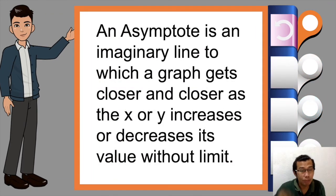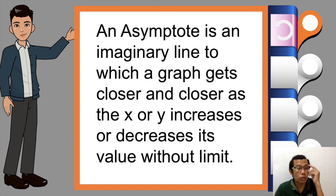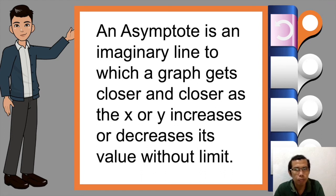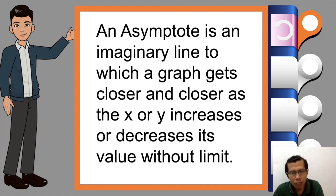Now let's define the term. An asymptote is an imaginary line to which a graph gets closer and closer as the x or y increases or decreases its value without limit. So the asymptotes will also serve as the limit of the function, or in layman's terms, boundaries. There's a famous saying we always associate with the term asymptotes: 'Pilit kayong pinaglalapit, subalit hindi kayo pinagtagpo.' Okay, no more jokes. Back to our topic.